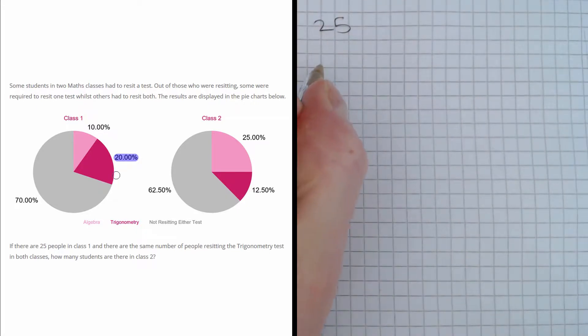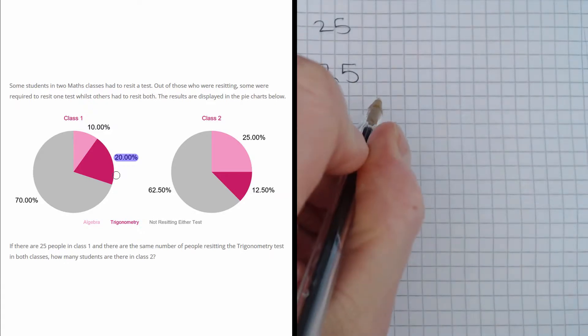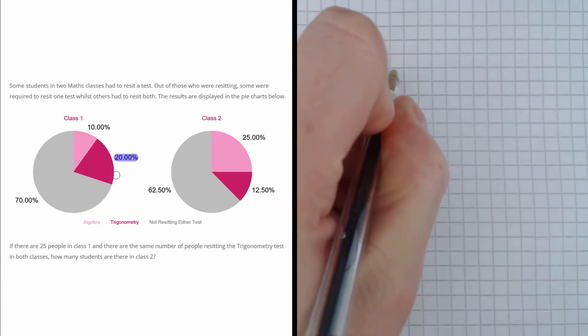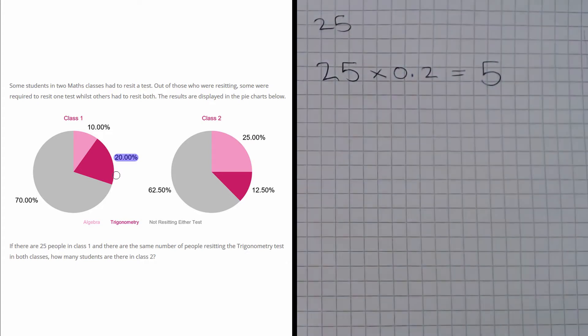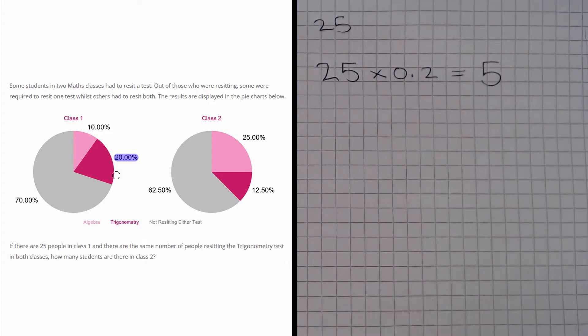So let's find 20% of the 25 students in the class. So we can do 25 multiplied by 0.2, and that gives us 5. So this tells us that 5 people in class 1 are resitting trigonometry.